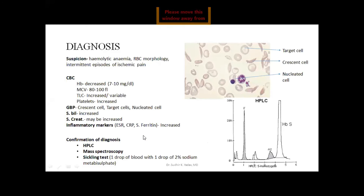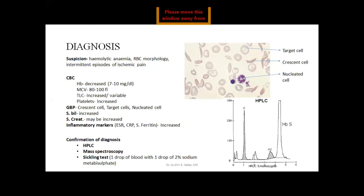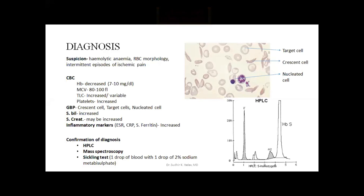Apart from HPLC, we can do mass spectroscopy, where HbS is identified. A sickling test can also be performed: one drop of blood is taken and mixed with one drop of 2% sodium metabisulphite. Sodium metabisulphite acts as an oxygen scavenger — it consumes oxygen, leading to deoxygenated hemoglobin and sickling. A peripheral blood smear is then drawn and examined under the microscope to observe sickling. Another reagent is sodium hyposulphate, which can be added into blood and the result observed by the naked eye, but it is costly and not always available.